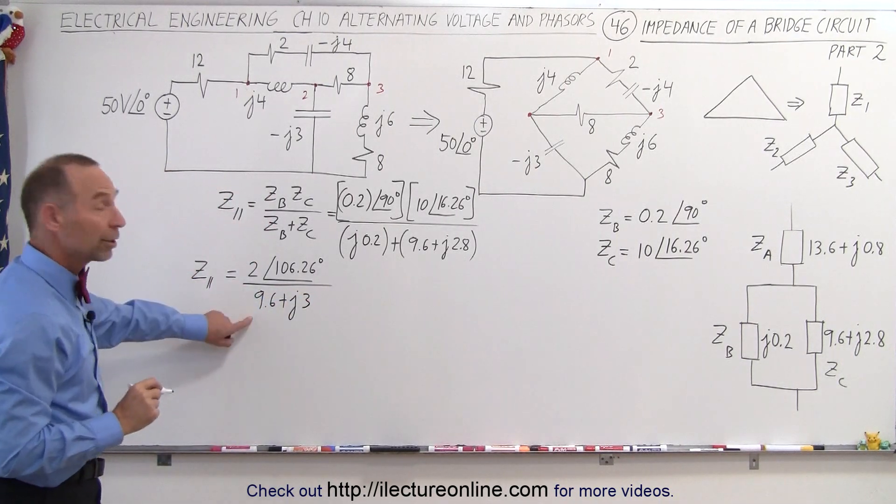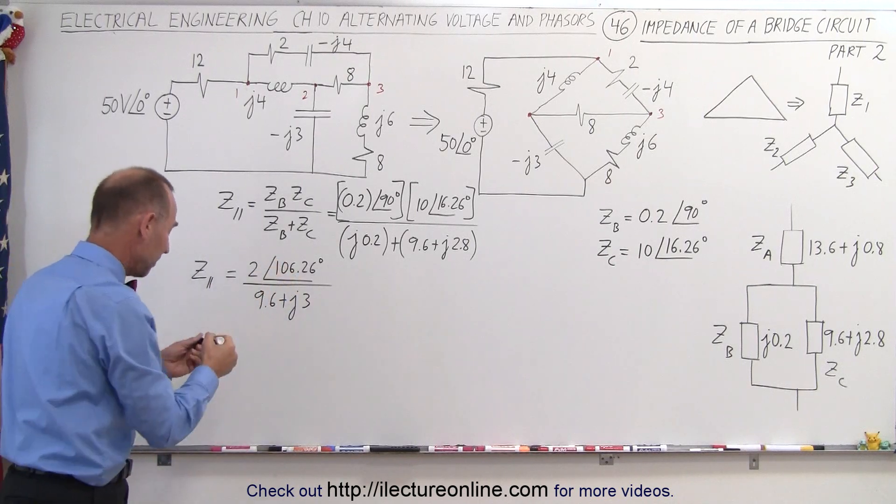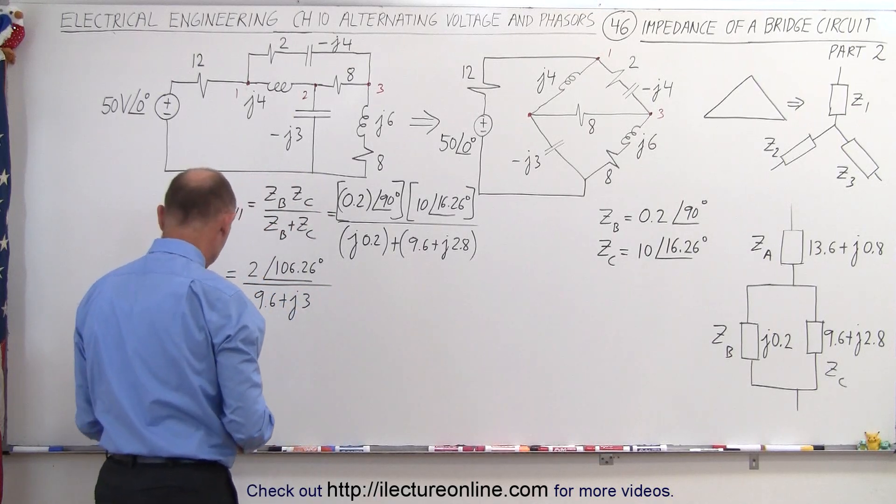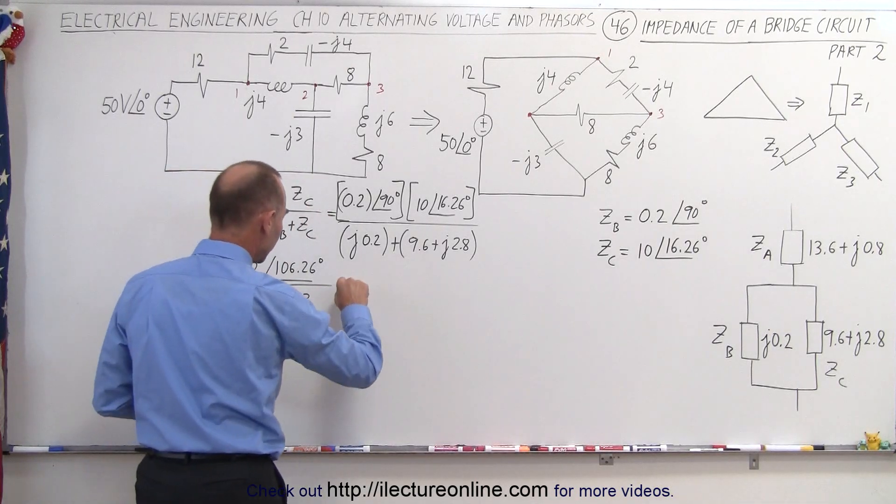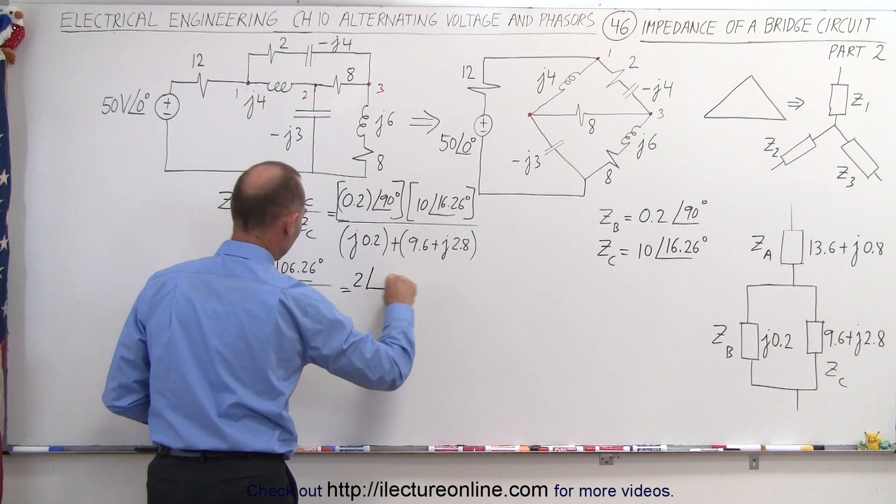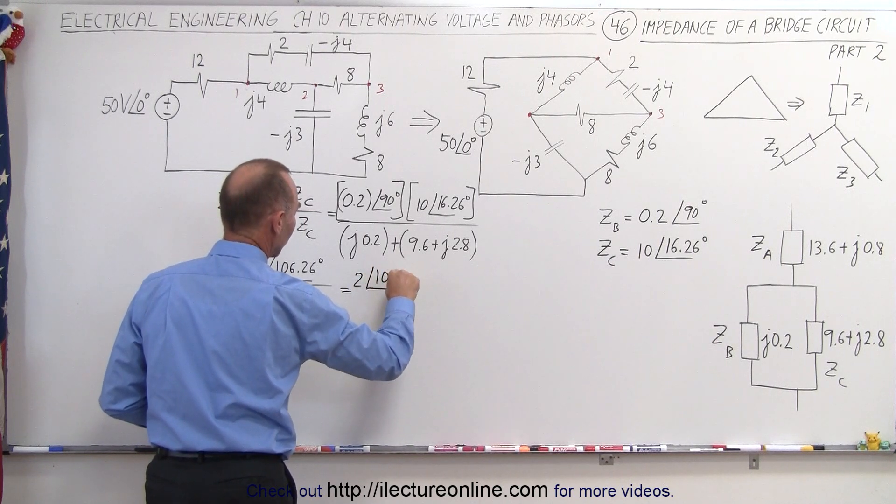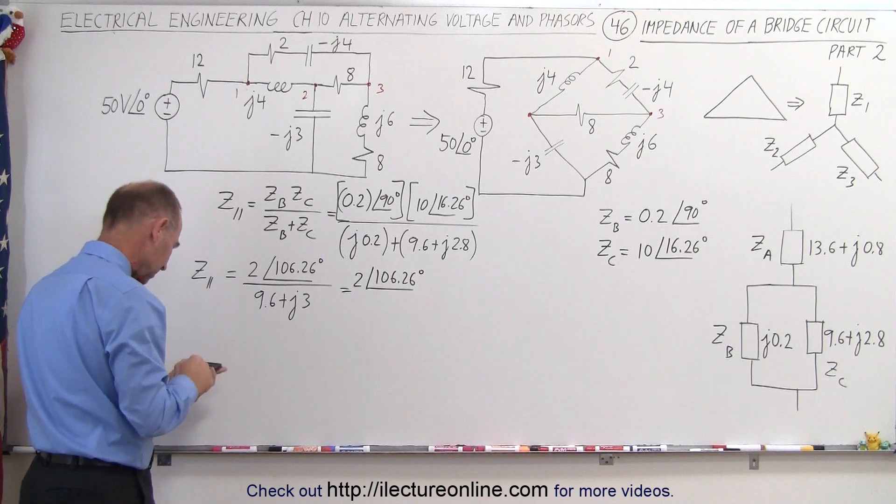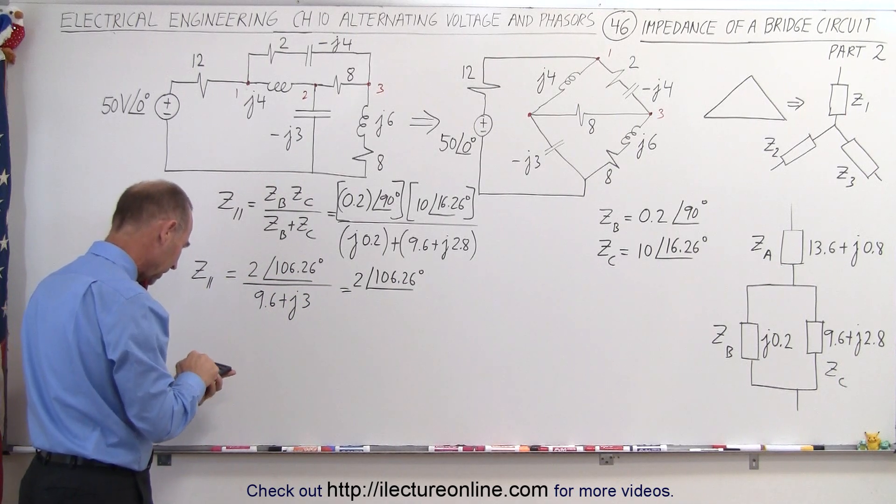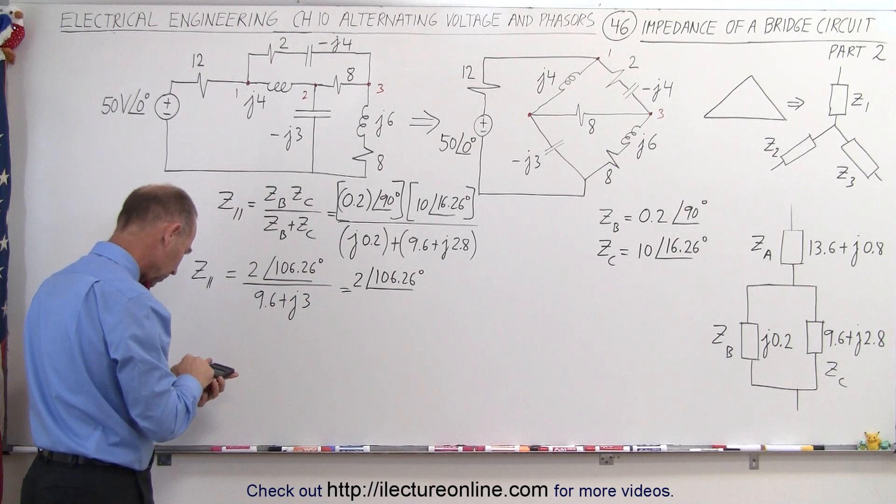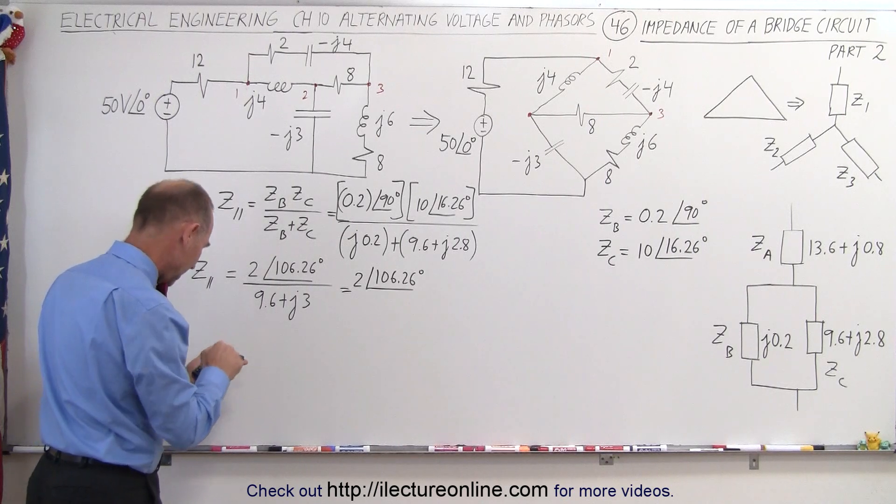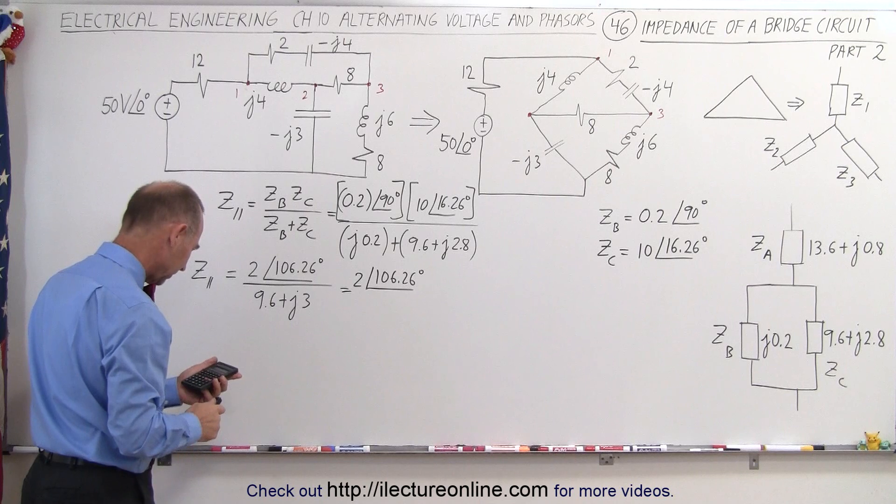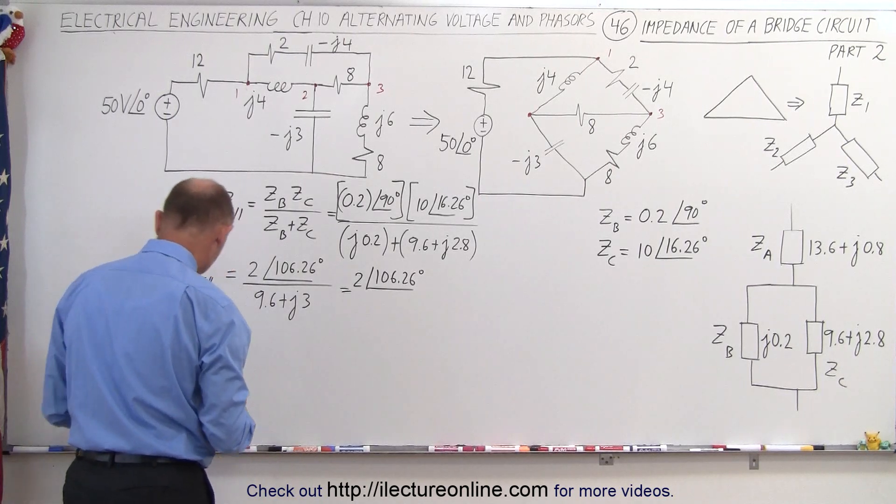Now we want to convert that into the same format, magnitude and phase angle. So the numerator, that's 2 with a phase angle of 106.26 degrees. In the denominator, we take 9.6, we square that, plus 9, take the square root, that gives us 10.06.